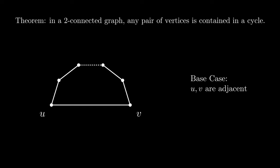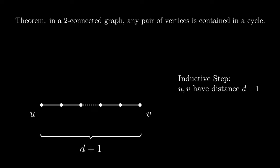Now, assuming the inductive hypothesis that this holds for any vertices distance d apart, we can prove the inductive step for when u and v are distance d plus 1 apart. First, we label the point w, the point immediately preceding v in the path from u to v. The distance from u to w is now d, which means that by our inductive hypothesis, there is some cycle that contains u and w.